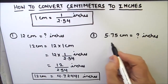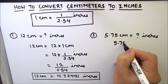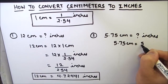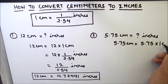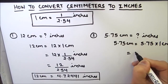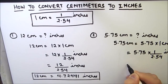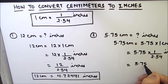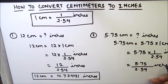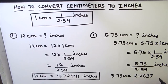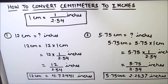Let us now solve one more example where the centimeter value is in decimals. We can write 5.75 centimeters as 5.75 times one centimeter, and in place of one centimeter we write 1/2.54 inches. This gives us 5.75 divided by 2.54 inches, which equals approximately 2.2637 inches. This is how, by dividing centimeters by 2.54, you can convert centimeters to inches.